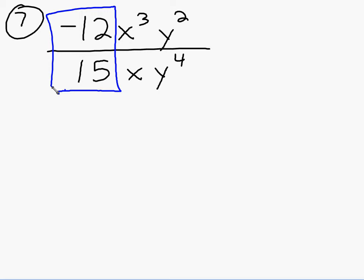Let's first simplify the 12 15ths. What would I divide both of those by? Three. If I divide 12 by 3, I get 4, but it is technically a negative 4. If I divide 15 by 3, I get 5.